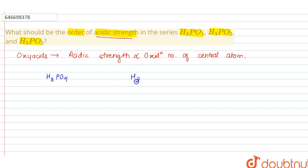For H3PO4, H3PO3, and H3PO2, the central atom is phosphorus in all cases. In H3PO4, the oxidation state of phosphorus is +5. In H3PO3, it is +3. And in H3PO2, it is +1.